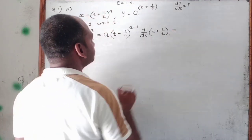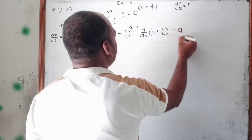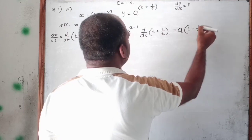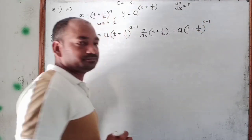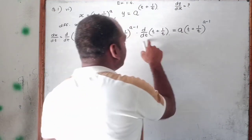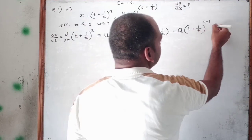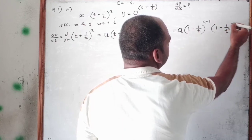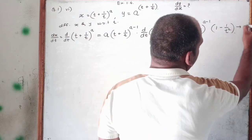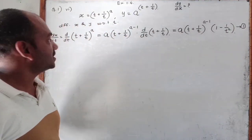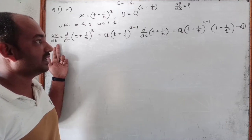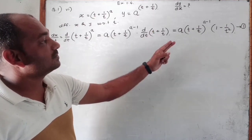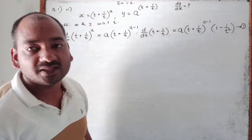Now finally, this derivative we have to solve. So that is equal to: a in bracket t plus 1 upon t, bracket raised to a minus 1, and the derivative of this part — the derivative of t is 1, and the derivative of 1 upon t is minus 1 upon t squared. So this is the derivative of x with respect to t, and we label this equation number 1.